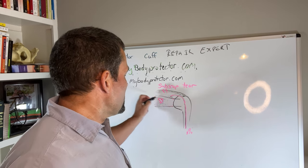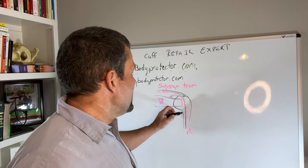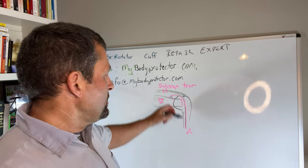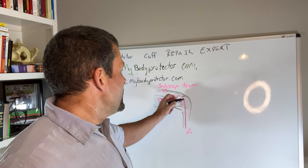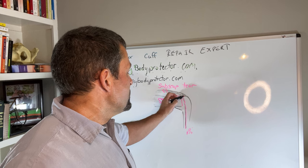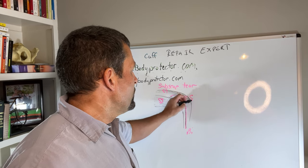And then the subscapularis comes across and attaches on what's called a lesser tuberosity, a little bump in the front of your shoulder. And the supraspinatus comes across here and attaches to the greater tuberosity.